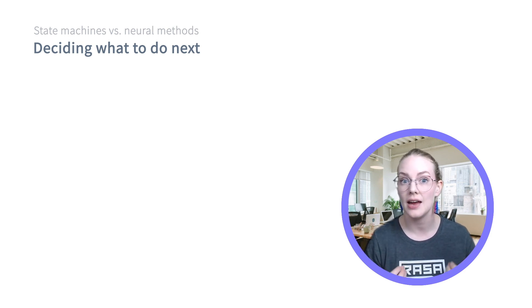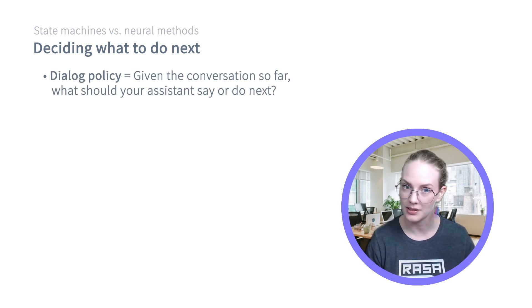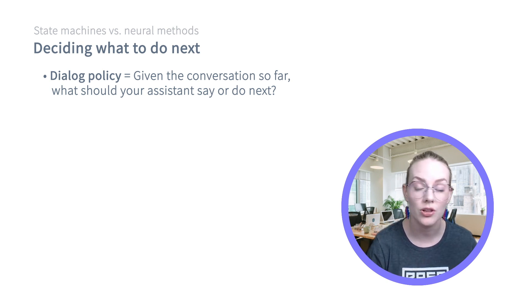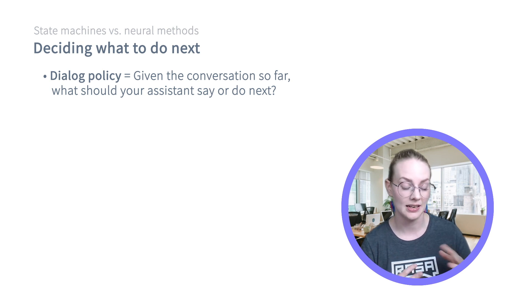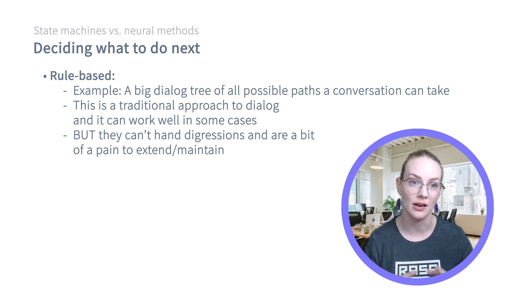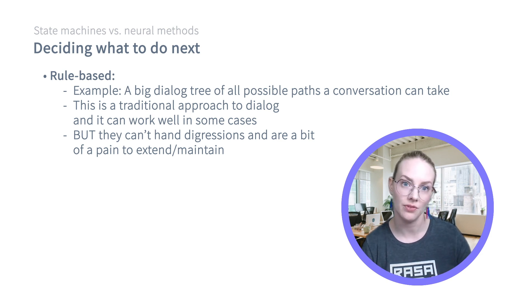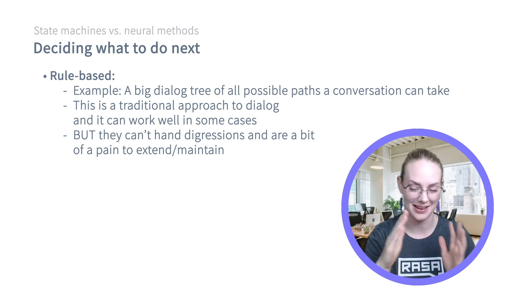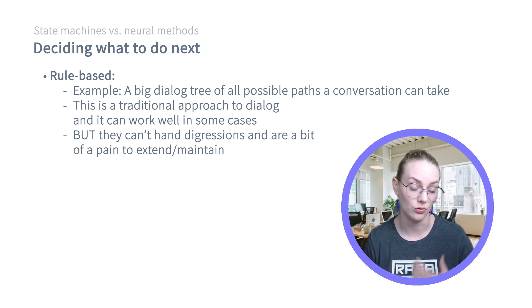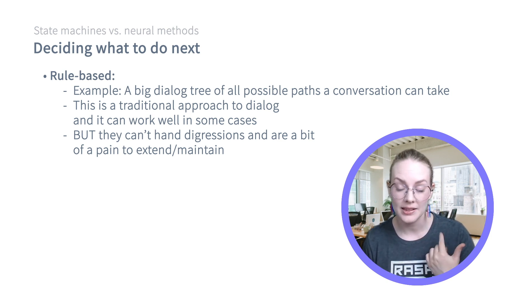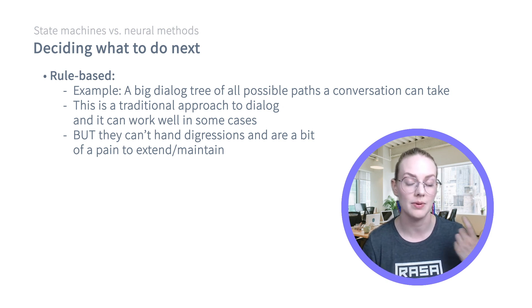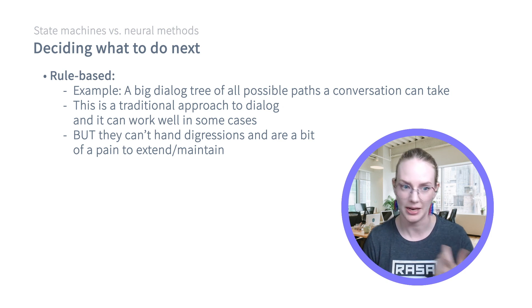Once you have information in a featurized machine-readable state, you need to decide what to do next. This task is called a dialogue policy — what your chatbot uses to decide whether to respond to the user, execute some code, or wait for a response given the conversation so far. A rule-based way of doing this is a dialogue tree — like in video games where you select things to say and the conversation proceeds down that path. This traditional approach works well when interactions are limited, but it can't handle digressions well, and for longer, more complex conversations it quickly becomes very difficult to maintain. These are also called state machines.